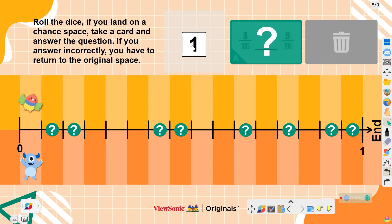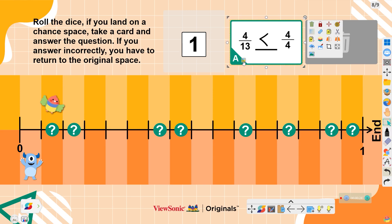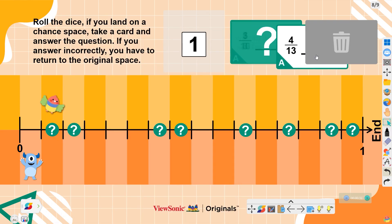Let's compete in groups. Roll a dice. If you land on a chance space, take a card and answer the question. If you answer incorrectly, return to the original space.